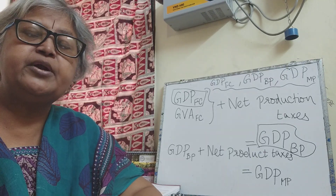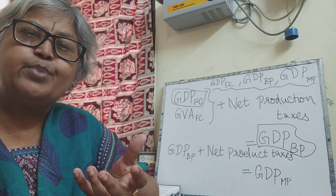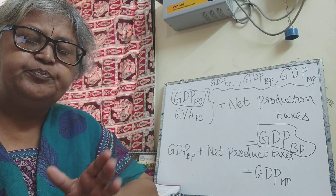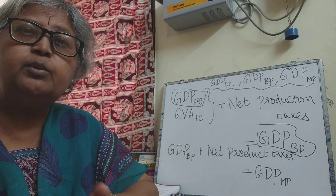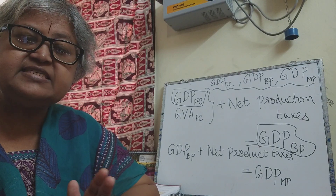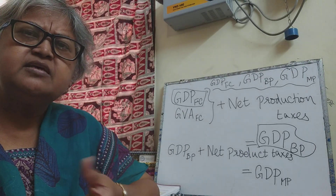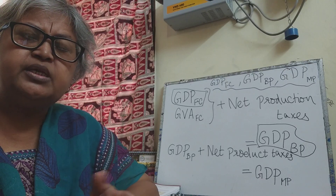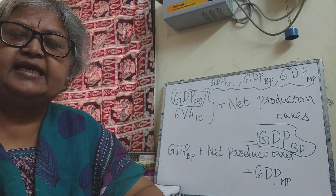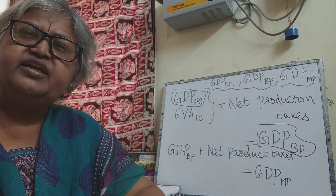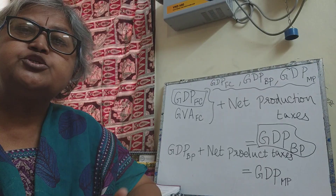Net production taxes gives you the difference between production taxes and production subsidies. So what is a production tax? As the very word tells you, it is a tax on the production of products, levied on the firm. This tax is a lump sum tax and it is not based on the volume of production - it is independent of the volume of production. For example, firms starting up production or expanding require to buy land, so the land revenue, stamp fee, and registration fee collected by the government can be termed as production taxes.